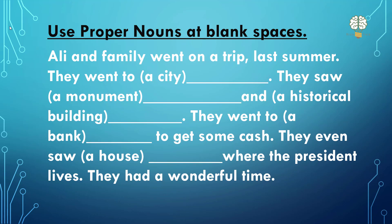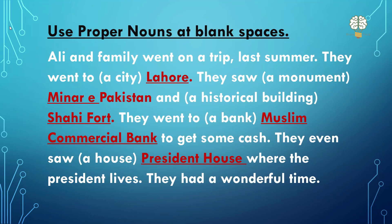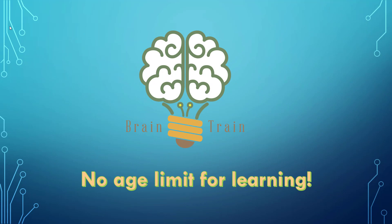They had a wonderful time. So let's see the answers. The name of the city is Lahore. Ali and family went on a trip last summer. They went to Lahore. They saw Minar-e-Pakistan and Shahi Fort. They went to Muslim Commercial Bank to get some cash. They even saw the President's House where the president lives. They had a wonderful time. I hope you have done it very well, and you understand how you can use these nouns. Give your comments — write down how well you did and share with me. Thank you so much. Keep learning. Like it, share it, and subscribe. Goodbye till the next video.